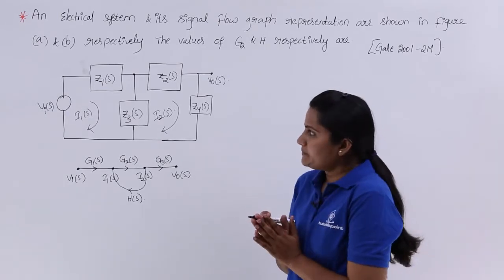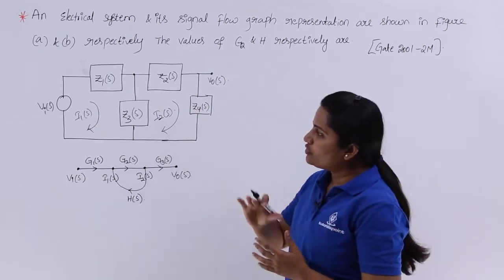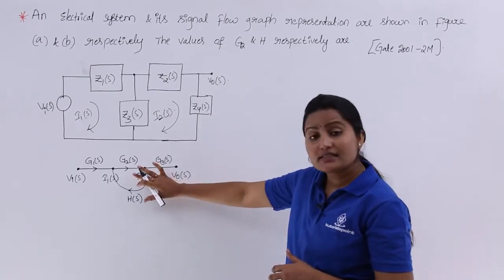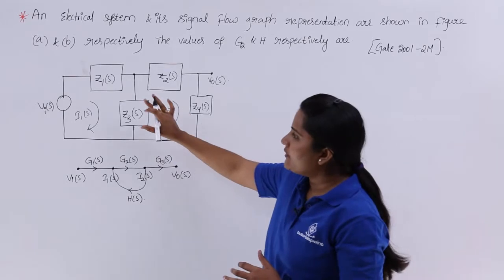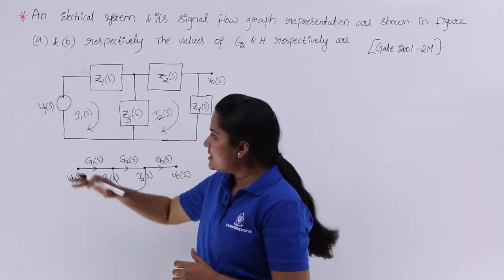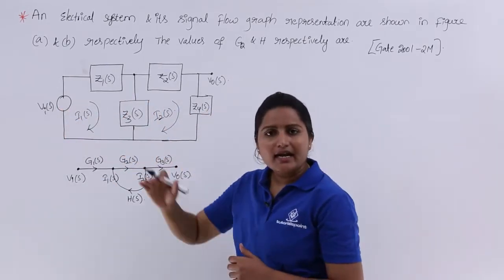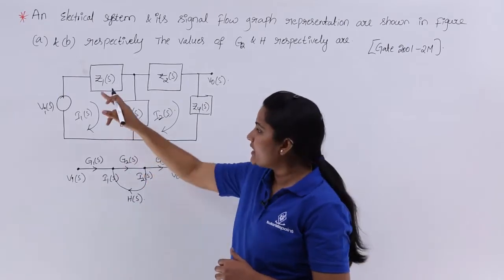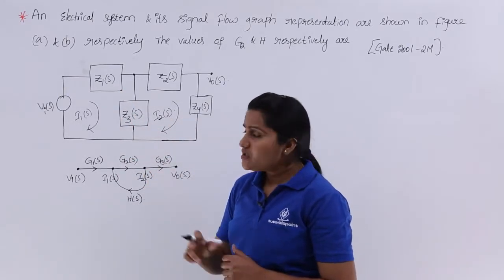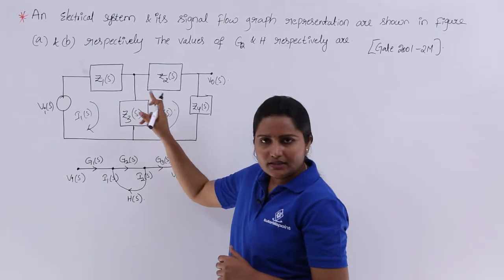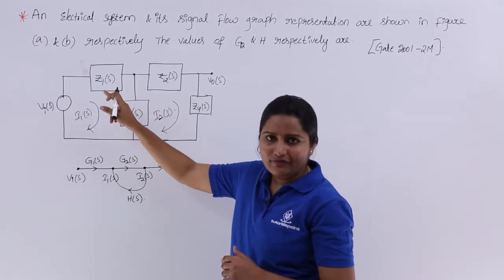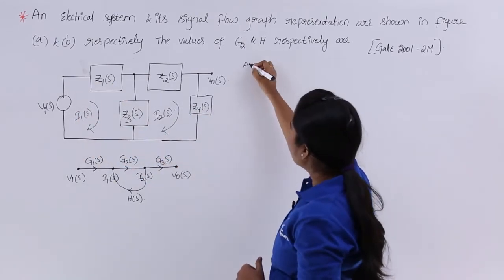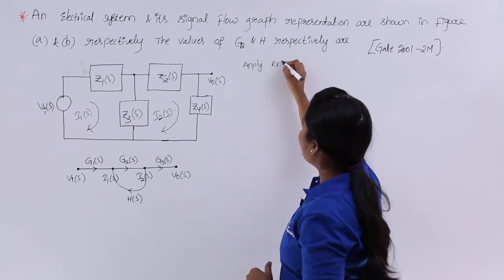To solve this problem, I want to derive equations from the electrical network and also from the signal flow graph. The electrical network has input voltage, output voltage, and impedances Z1(S), Z2(S), Z3, Z4, with currents I1 and I2. I will apply KVL for loop 1.